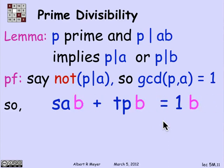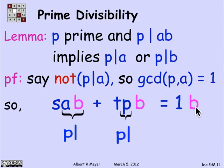Multiply everything by b. So s·a·b + t·p·b = b. Now look at what we have. The first term on the left is something times a·b, and p divides a·b, so that first term is divisible by p. The second term explicitly has a p in it, so it's certainly divisible by p. So the left-hand side is a linear combination of multiples of p, and therefore itself is a multiple of p, which means the right-hand side is a multiple of p, and the right-hand side is b. So p divides b. We're done.